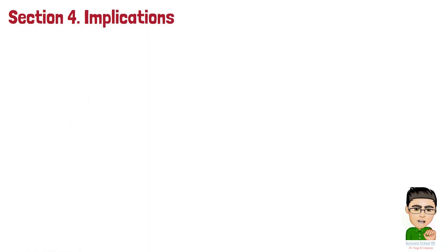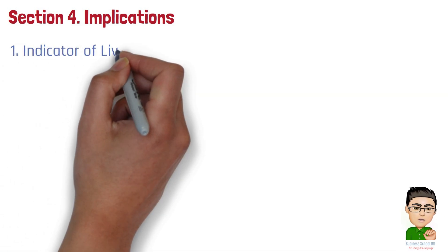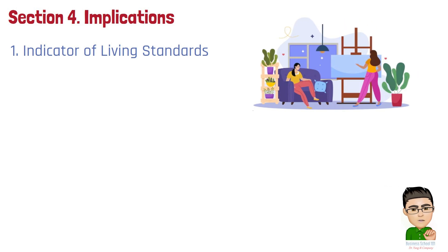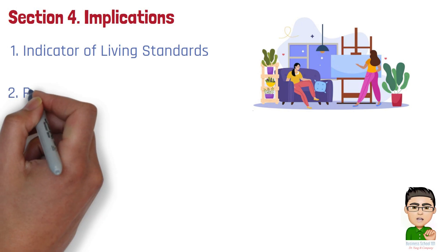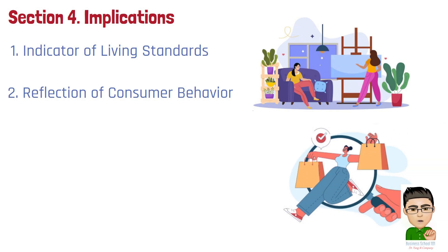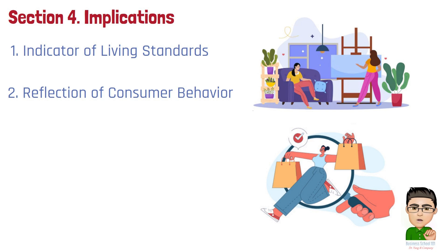Section 4: Implications. Here are five of the most significant implications of the Engel Coefficient. Number 1: Indicator of Living Standards. The Engel Coefficient is often used as a proxy for the standard of living. A lower coefficient typically indicates a higher standard of living, as it suggests that a smaller share of income is needed to cover basic food expenses, allowing for more discretionary spending. Number 2: Reflection of Consumer Behavior. The Engel Coefficient reflects how consumers allocate their spending. As income increases, the proportion spent on food tends to decrease, while spending on non-essentials such as education, health care, and leisure tends to increase, indicating a shift in consumer preferences.